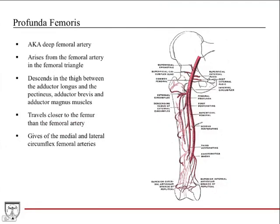The profunda femoris artery — also known as the deep femoral artery or femoral profunda — is a branch off the femoral artery that arises in the femoral triangle. It descends in the thigh between the adductor longus, pectineus, adductor brevis, and adductor magnus muscles, traveling closer to the femur than the femoral artery and deeper in the thigh than the superficial femoral.